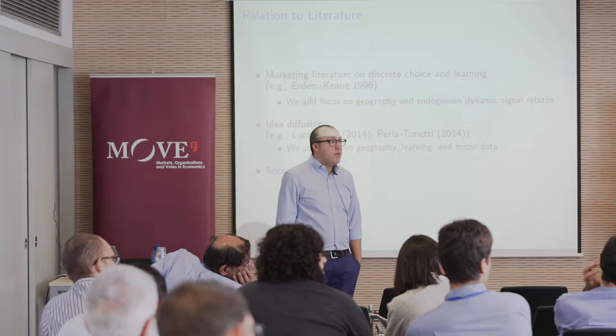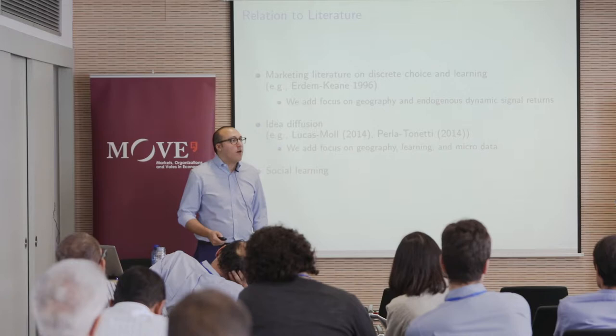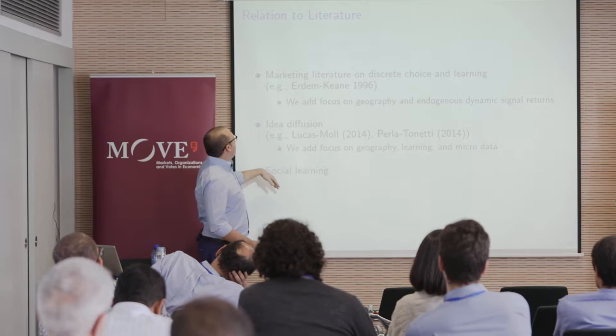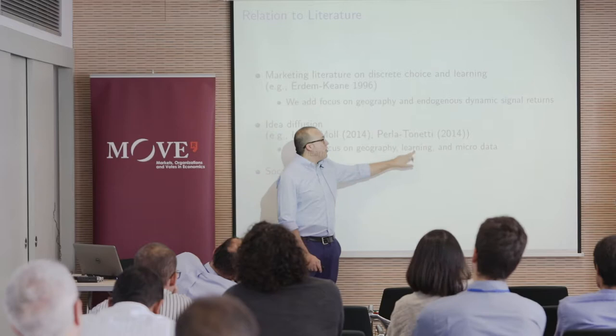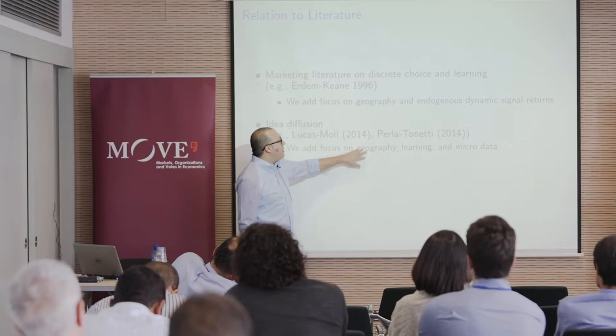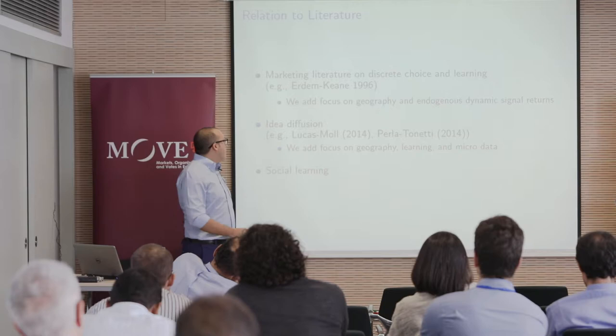The drugs in question help heart health, hopefully preventing heart attacks and extending life. Relative to the idea diffusion literature, what we're going to add is regions—geography—and Bayesian learning. In the idea diffusion literature, the mechanism is usually meet-and-copy productivity: if I meet you and you're more productive, my productivity becomes yours. Here the micro mechanism for how doctors get better over time is very different. This paper is very much about social learning on a network.